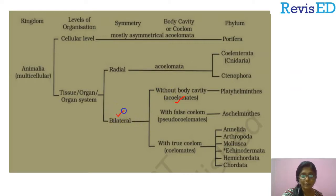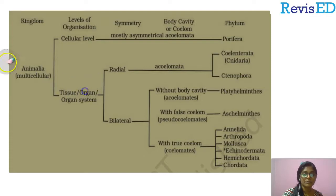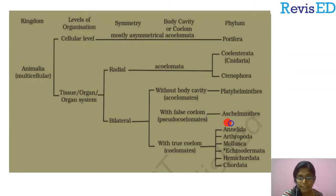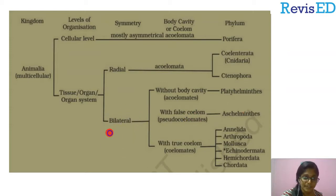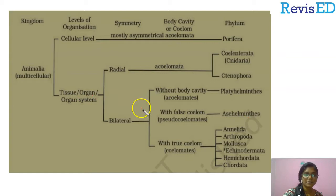Platyhelminthes are bilaterally symmetrical and have organ system level of organization. The next classification is animals having a false coelom — Aschelminthes are included here. Aschelminthes are pseudocoelomates, bilaterally symmetrical, and have organ or organ system level of organization.